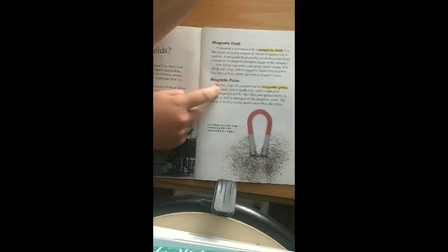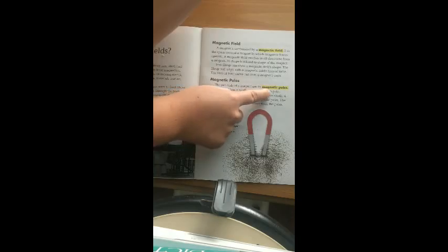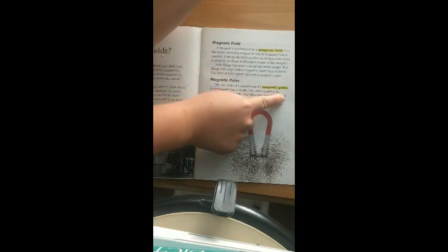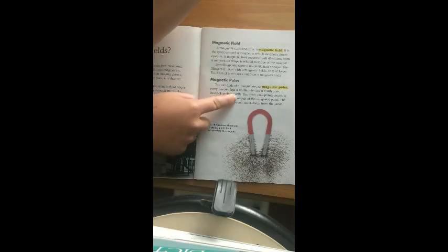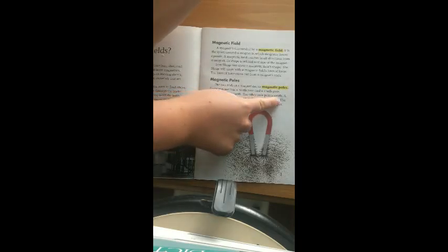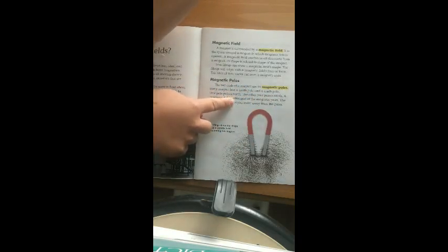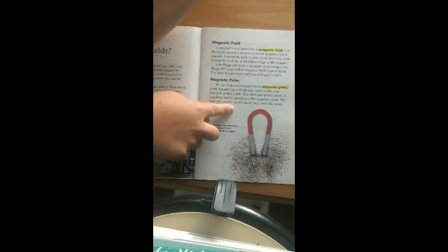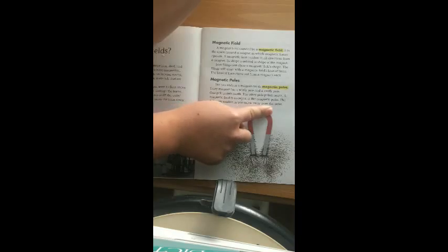Magnetic Poles. The two ends of a magnet are its magnetic poles. Every magnet has a north pole and a south pole. One pole points north. The other pole points south. A magnetic field is strongest at the magnetic poles. Its field gets weaker as you move away from the poles.